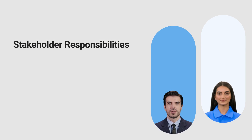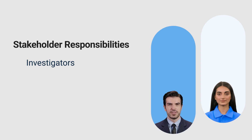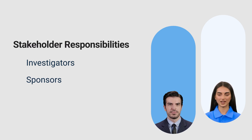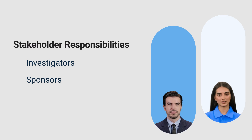The E6 R3 draft guidelines outline increased responsibilities for all stakeholders involved in clinical trials. Investigators are responsible for conducting the trial according to the protocol and ensuring the integrity of the data. This includes duties such as recruiting and informing participants, managing the day-to-day operations of the trial, and ensuring that all trial procedures are followed correctly. Additionally, investigators must maintain accurate and complete records of all trial activities. Sponsors have a heightened role in overseeing the trial, ensuring compliance with the guidelines, and supporting investigators in maintaining high standards of quality and ethics. Sponsors are responsible for providing the necessary resources, training, and support to investigators. This includes developing the trial protocol, ensuring it complies with regulatory requirements, and monitoring the trial's progress. Sponsors must also ensure that all data is accurately collected, analyzed, and reported.